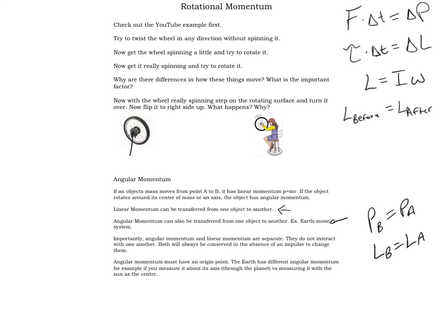Both will always be conserved in the absence of an impulse. If there's no outside force, then linear momentum before equals momentum after. And if there's no outside torque, then the angular momentum before equals the angular momentum after. So whenever you're trying to determine whether angular momentum is conserved, just think about whether or not there's a torque being applied. Remember, a torque has to have both a force and a radius — it has to be applied at a distance. So in order to apply torque to the wheel, you would have to put a force on the edge of the wheel. If you put your hand on the edge to slow it down, you're applying a torque and it changes the angular momentum.